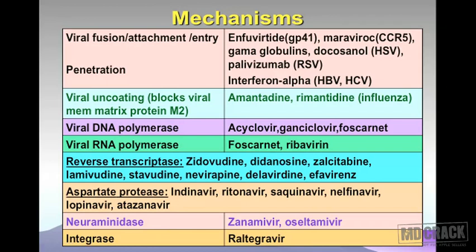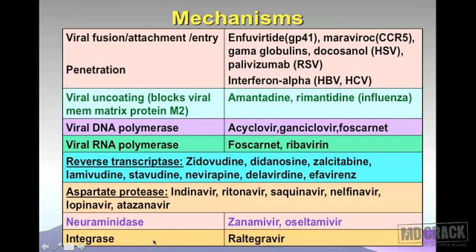Another enzyme is neuraminidase. Drugs that inhibit viral neuraminidase are useful in the management of influenza — these are zanamivir and oseltamivir. You may know oseltamivir by its brand name Tamiflu, used for influenza. These are the neuraminidase inhibitors.